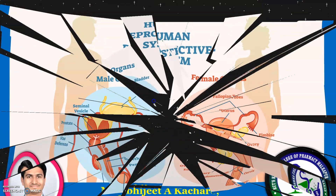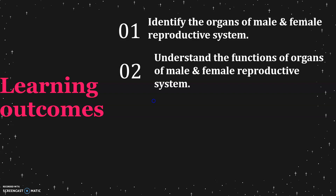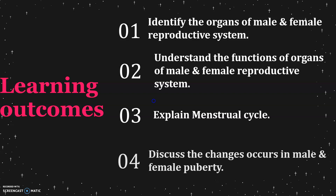Let us discuss the different learning outcomes for today's topic. Number one: students will be able to identify the organs of the male and female reproductive system, as they differ according to sexual presentation. Second: understand the functions of the organs present in the male and female reproductive system — for males the testes, for females the ovaries. Third: explain the menstrual cycle present in the female. Fourth: discuss the changes occurring during puberty in males and females.